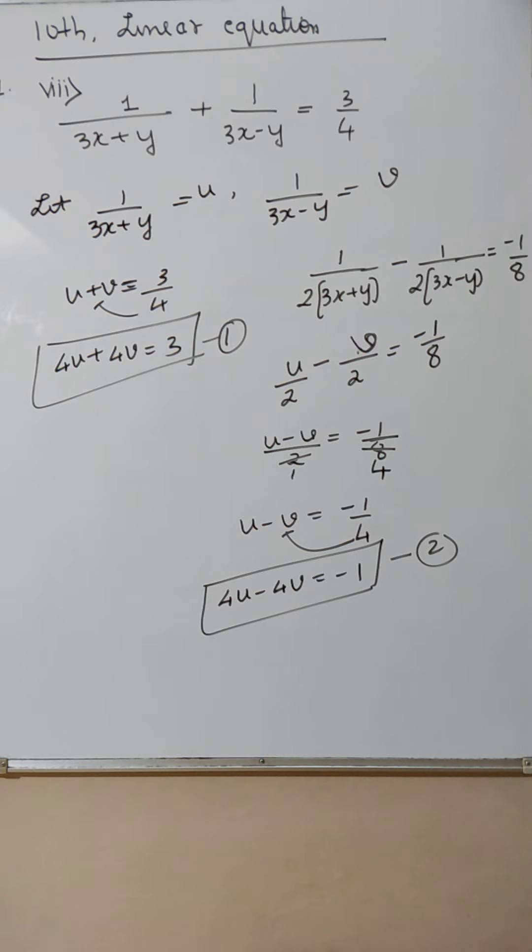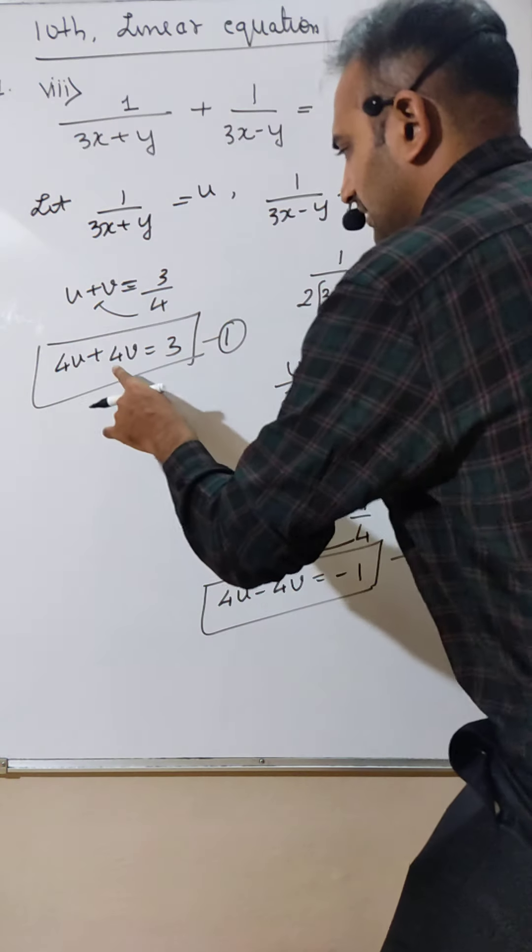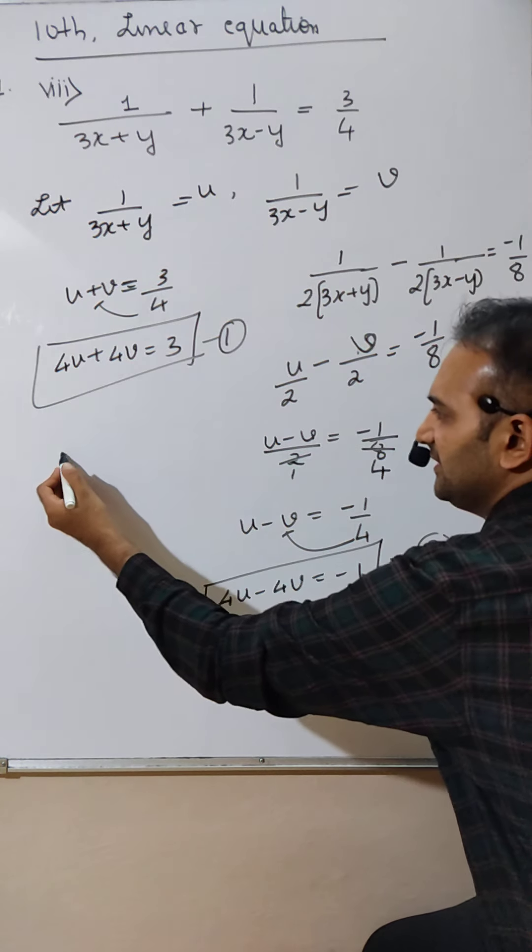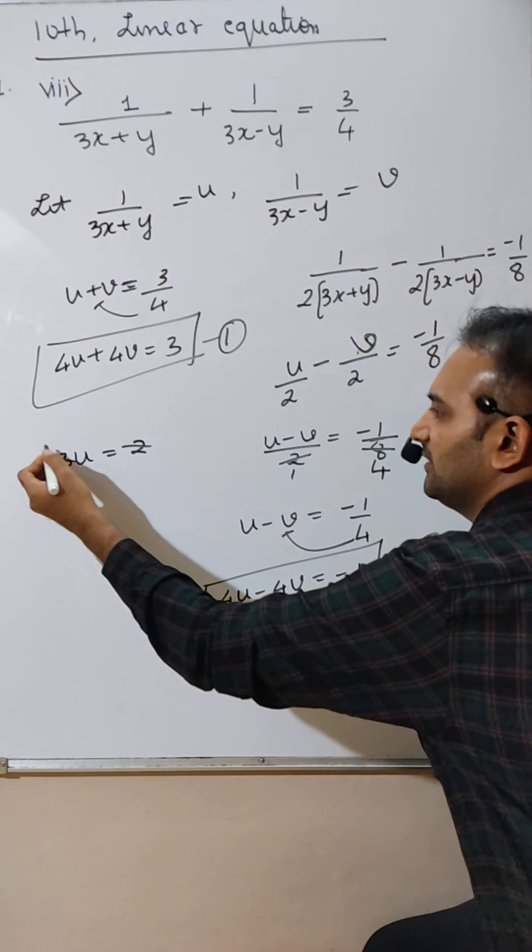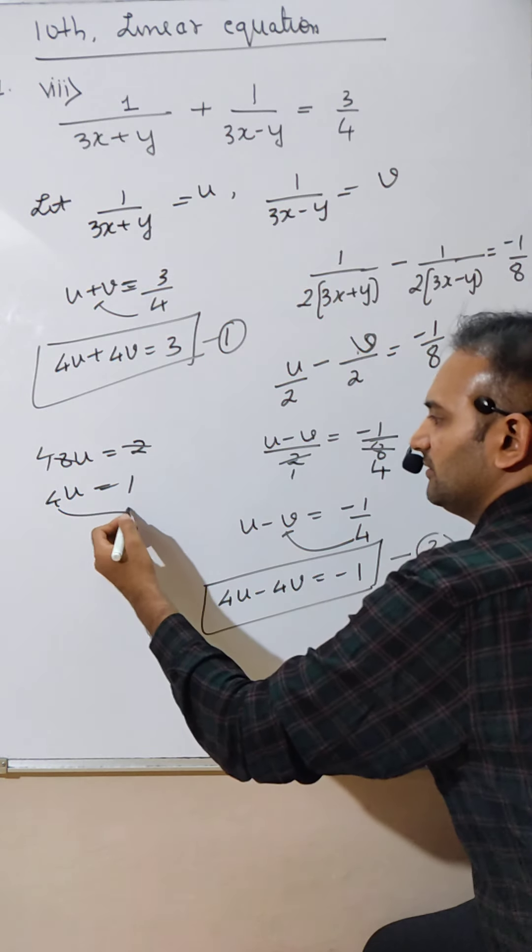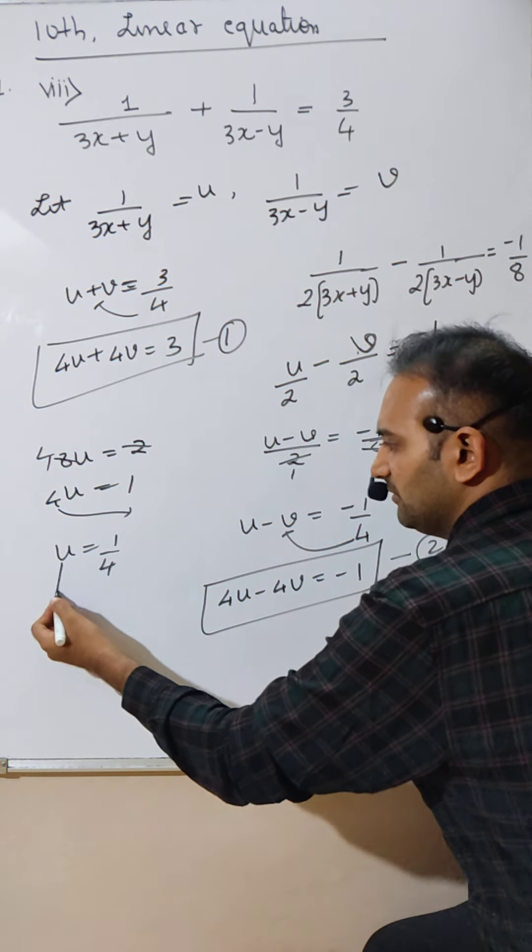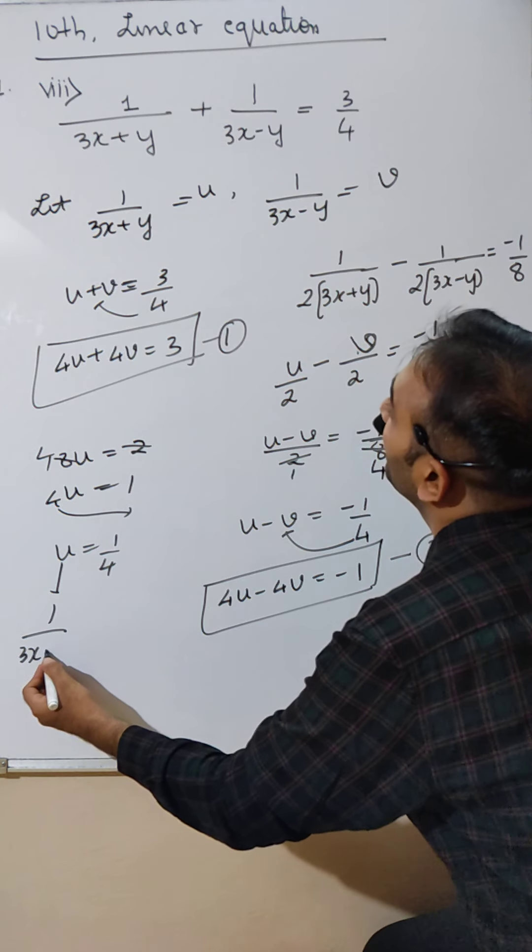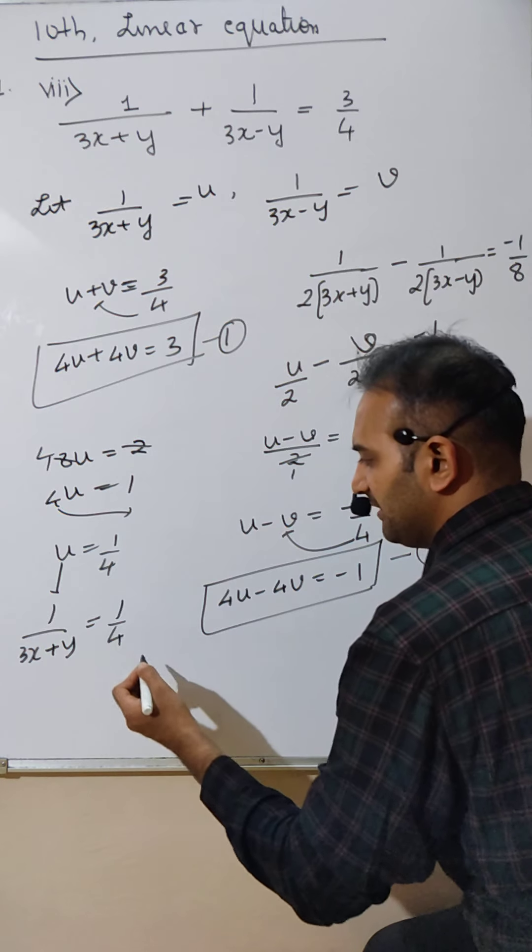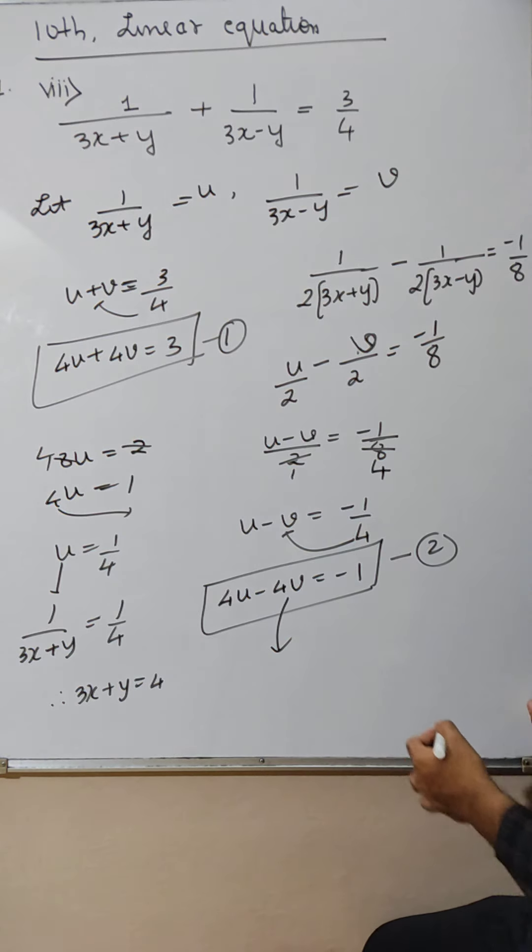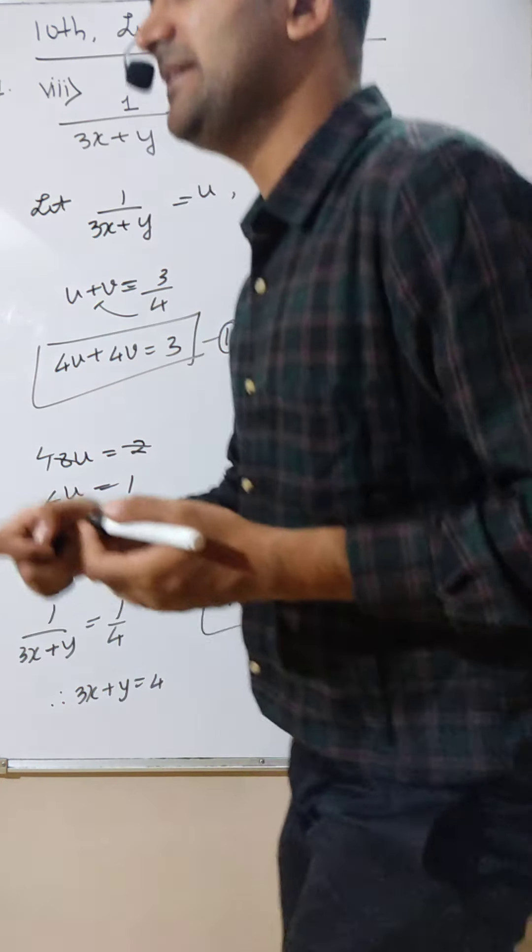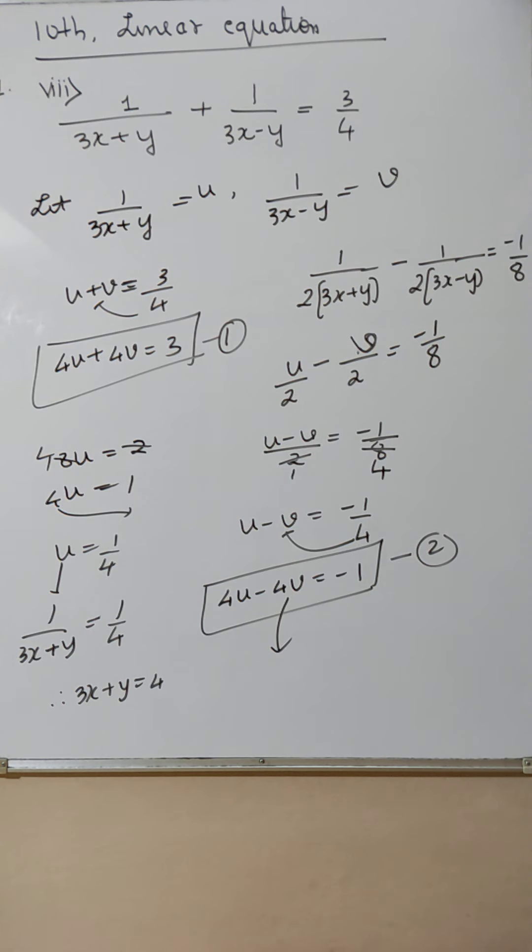Then you substitute. Here only you can do orally. 4 and 4 will cut, so 8u will come. 3 and minus 1 is 2, so u is cut. This will come down: u is 1 by 4. But what is u? u is 1 divided by 3x plus y equals 1 by 4. Therefore 3x plus y is 4. Like this way you will do for v also. You will get one more equation, then solve that linear equation once again and find x and y. I hope I am clear with this.